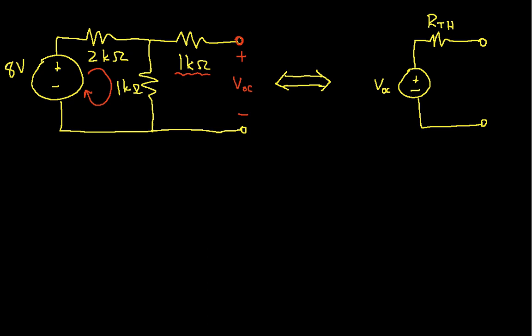This end of the 1k ohm resistor is not connected to anything, so there's no way for current to flow through it. Since there's no current flowing through the resistor, the voltage across it is 0 volts. This means the open circuit voltage I want to find is actually the voltage across this 1k ohm resistor — and since that voltage is 0, this point is at the same voltage as this point.